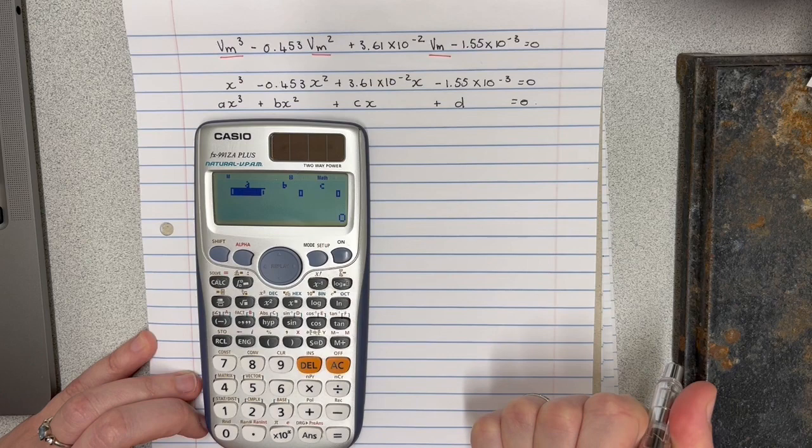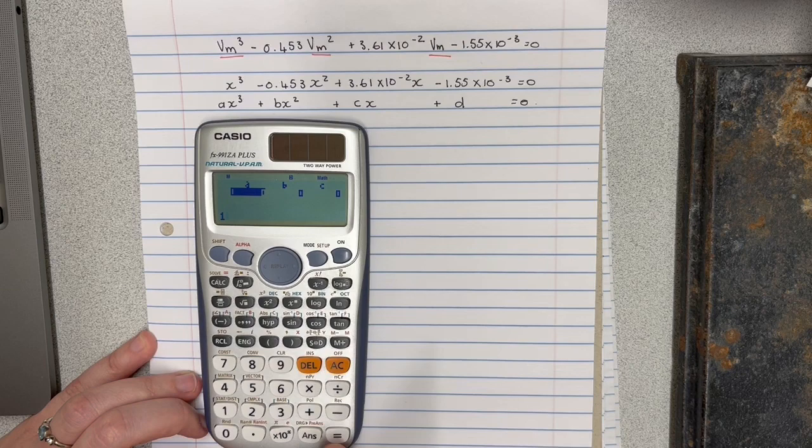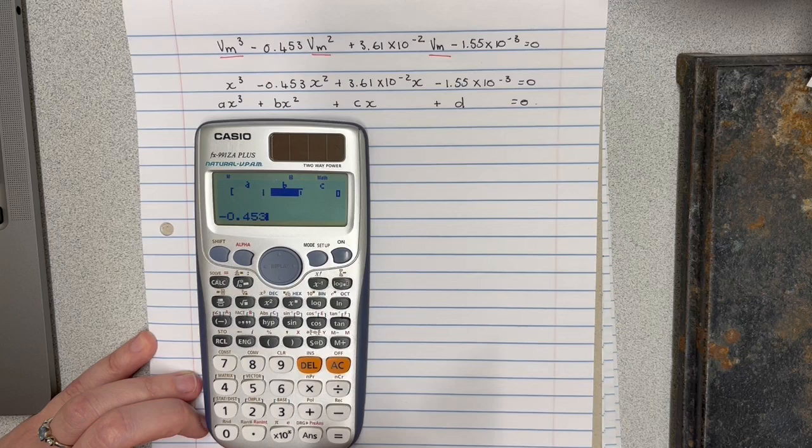So because there is no coefficient or number in front of the x cubed, we're just going to enter one for a. We're going to press enter, b is going to be negative 0.453, enter.